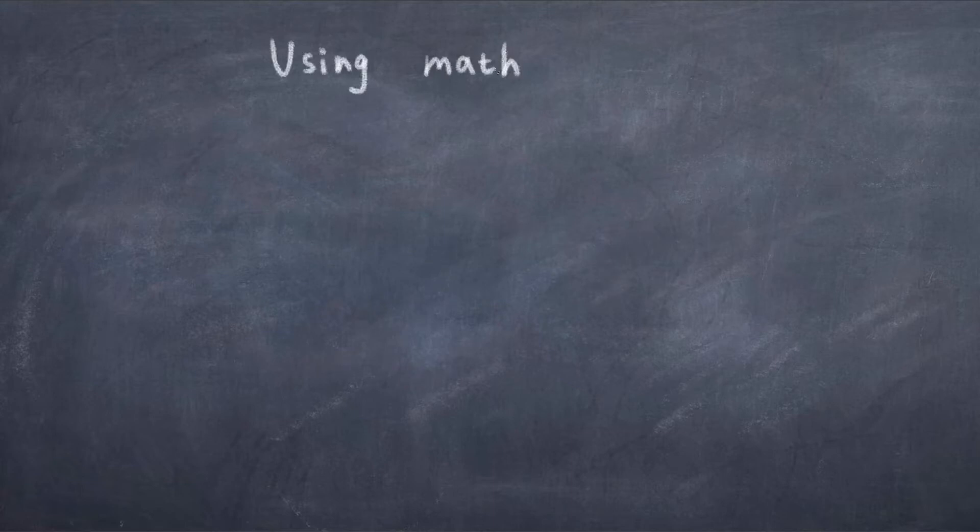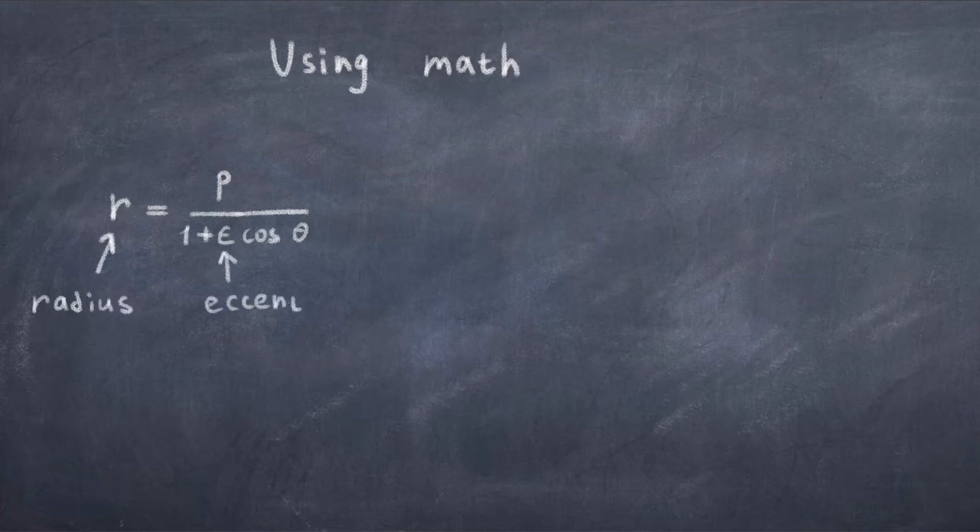Mathematically the law can be written as r equals p over 1 plus epsilon cosine theta, where r is the radius of the orbit, epsilon is the eccentricity, which is just a number between 0 and 1, and one can think of the eccentricity as a measure of how much the orbit deviates from being circular. So the bigger the number, the less it would look like a circle.